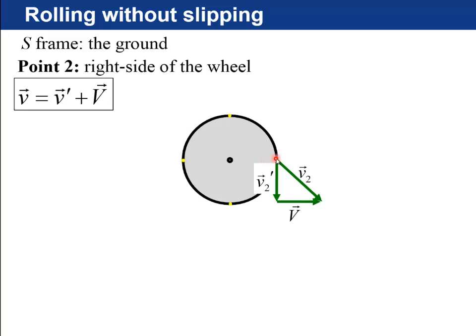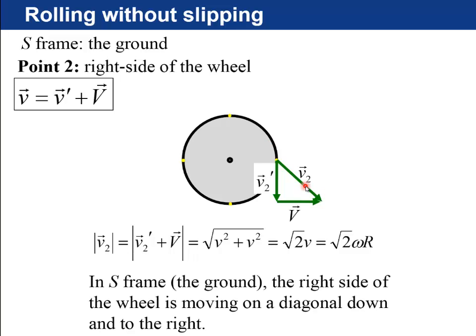If you look at point two on the right side of the wheel, you're now adding two vectors that are perpendicular, the rotational part, which is going down, and then the axle part, which is going to the right, and you get square root 2 times v as being the length of this vector. So in the ground frame, the point on the wheel just in the front there is moving diagonal down and to the right.